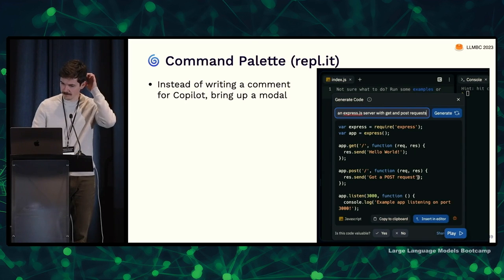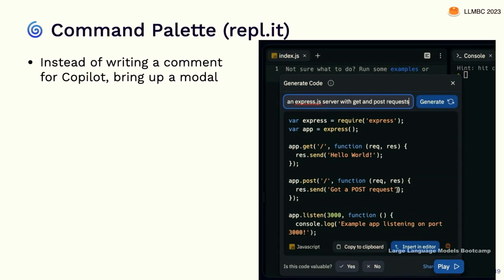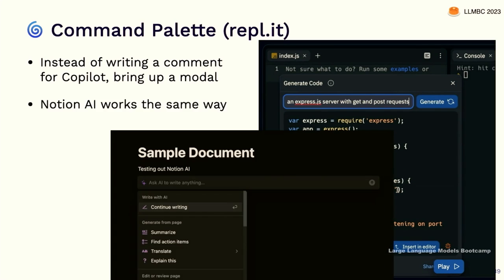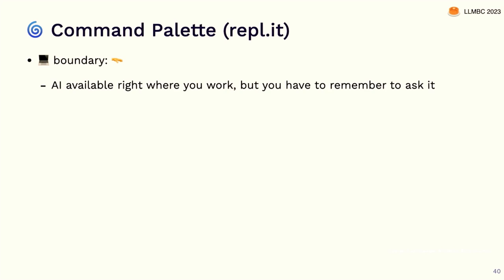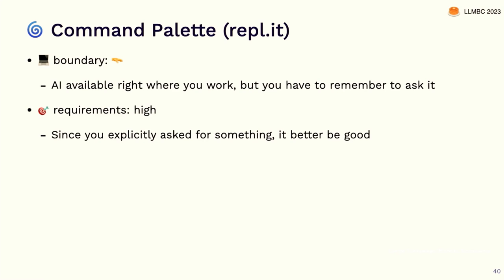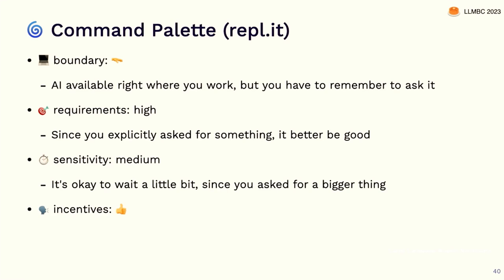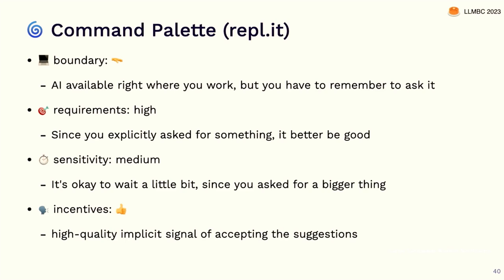The command palette interface from Replit is like: instead of writing a comment and hoping Copilot does the right thing, you bring up a modal that says 'What do you want to do? What code do you want to generate?' You type it out, get the code, and it's inserted into the editor. For document editing, Notion AI works the same way — press space, bring up the special AI thing, and say 'draft an email.' The boundary is where you work, but you have to remember to ask for AI assistance, whereas Copilot just gives it to you. The accuracy requirements are high since you're doing something intentional. Latency sensitivity is medium, and feedback incentives are good since acceptance is a high-quality signal.